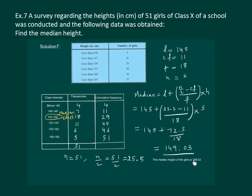This means that height of about 50 percent of the girls is less than 149.03 centimeters and about 50 percent are taller than 149.03 centimeters.